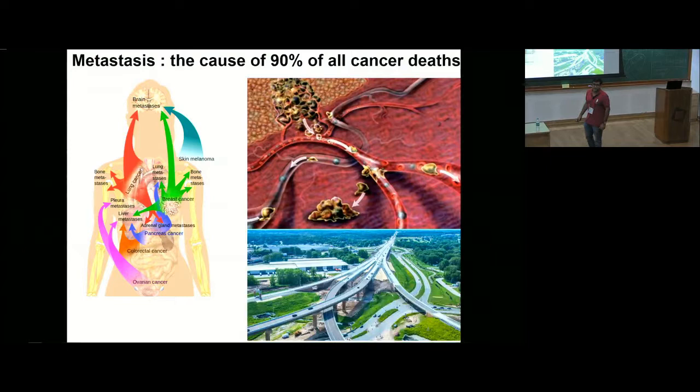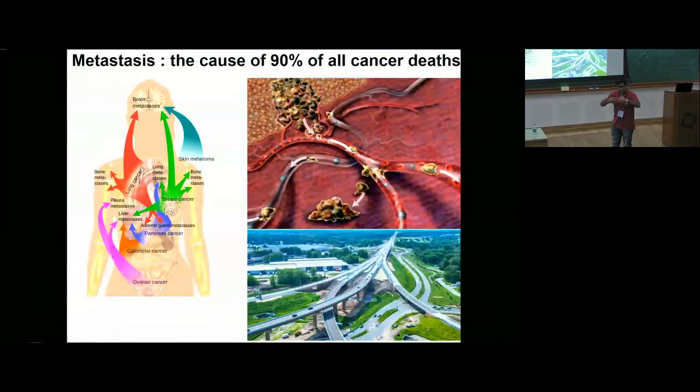How cancer spreads is by using this fantastic set of freeways in our body — the network of blood vessels. Cancer cells in one organ get on the blood vessels near them, travel to all different parts of the body, take different exits at different organs, and start forming tumors at those organs.